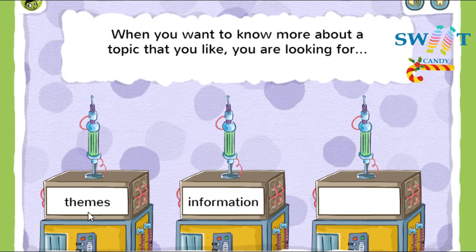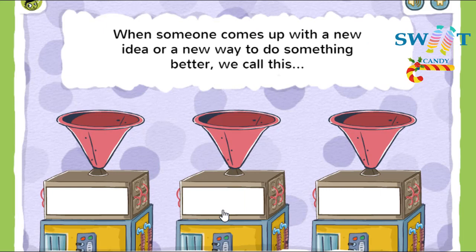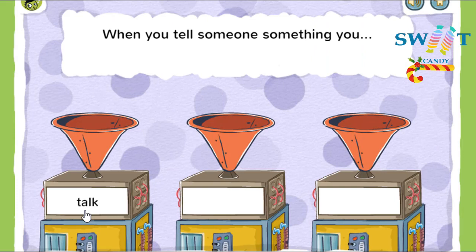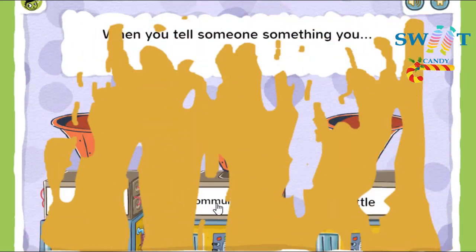When you want to know more about a topic that you like, you're looking for information. When you want information about something, you want to know things about it. When someone comes up with a new idea or a new way to do something better, we call this innovation. An innovation is a new idea, thing, or way to do something. When you tell someone something, you communicate. When you communicate, you tell someone something.